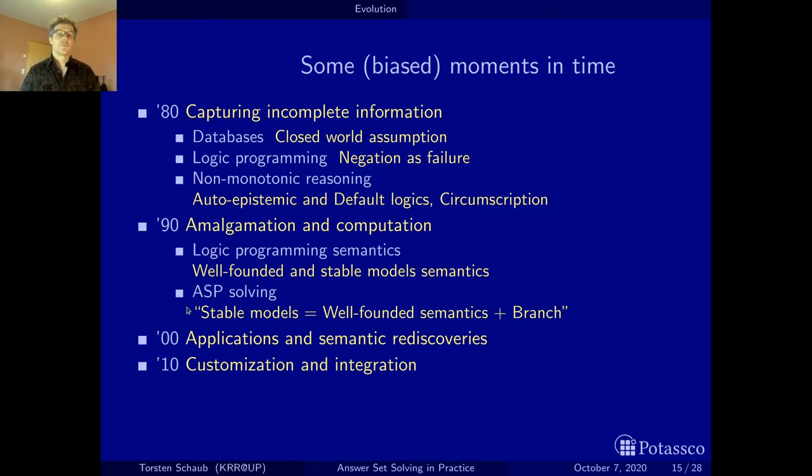At the time, V.S. Subrahmanian wrote a paper that simply says if you want to compute stable models, you compute the well-founded semantics, and when some things are still undefined, you do case analysis and you branch, then you do the well-founded semantics again. If you still have undefined atoms you branch. The most important thing is what happened in the 80s—this wild exploration of different alternatives converged in the 90s to stable model semantics and well-founded semantics.